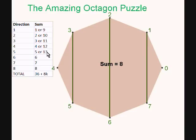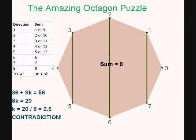But, remember, the sum was supposed to be 56. So, we have an equation. 36 plus 8k equals 56. Where k is the number of times we pick the higher of the two sums. If we solve this equation, we get k equals 2.5.